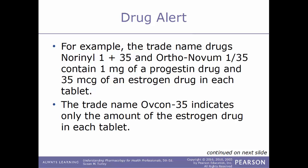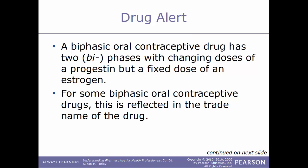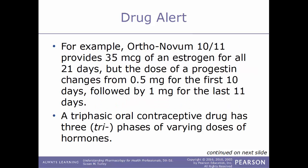The trade name Ovcon-35 indicates only the amount of the estrogen drug in each tablet, which is 35 micrograms. A biphasic oral contraceptive drug has two phases with a changing dose of progestin but a fixed dose of estrogen. For example, Ortho-Novum 10/11 provides 35 micrograms of estrogen for all 21 days, but the dose of progestin changes from 0.5 milligrams for the first 10 days to 1 milligram for the last 11 days.